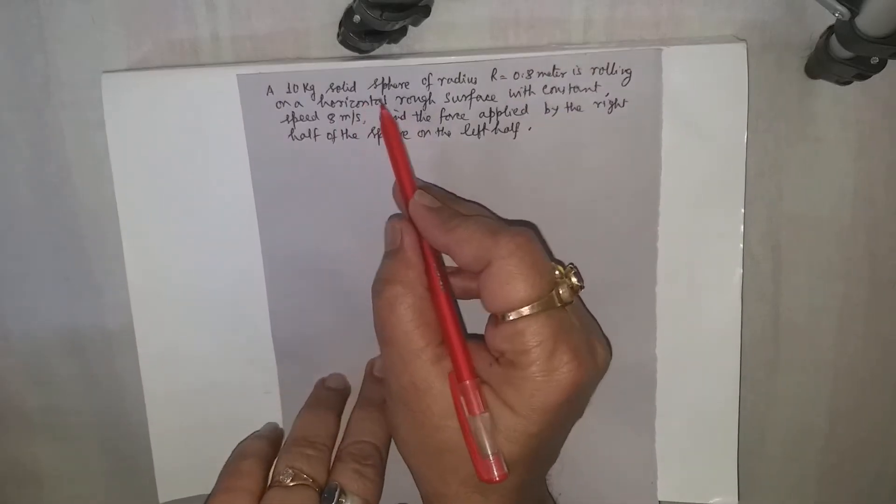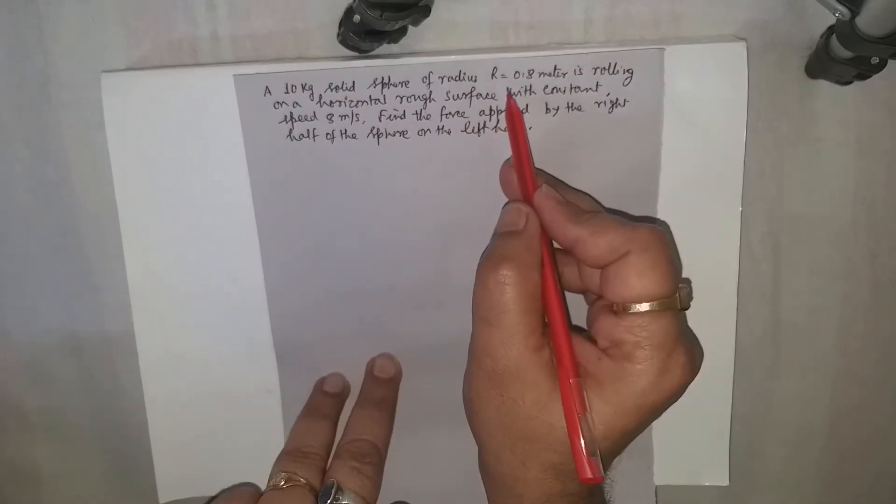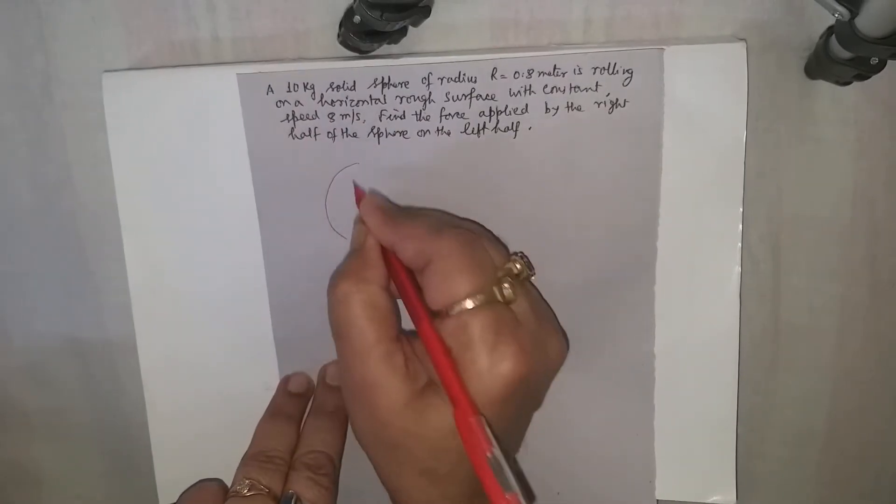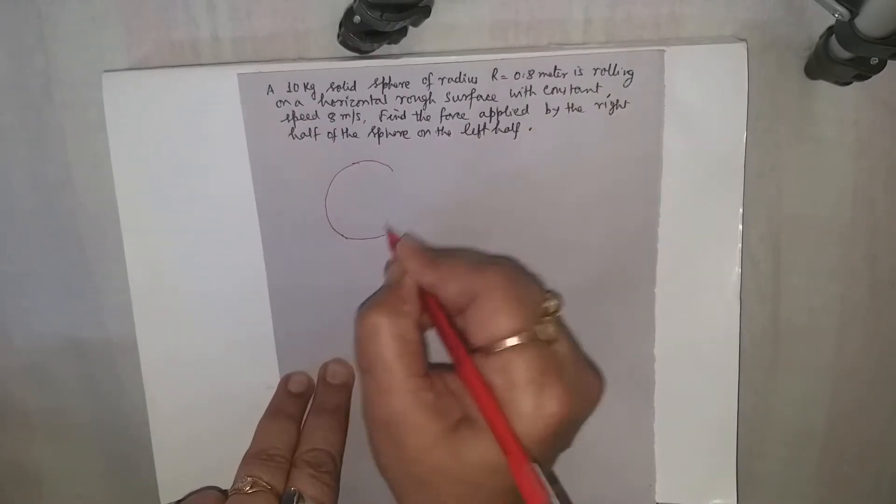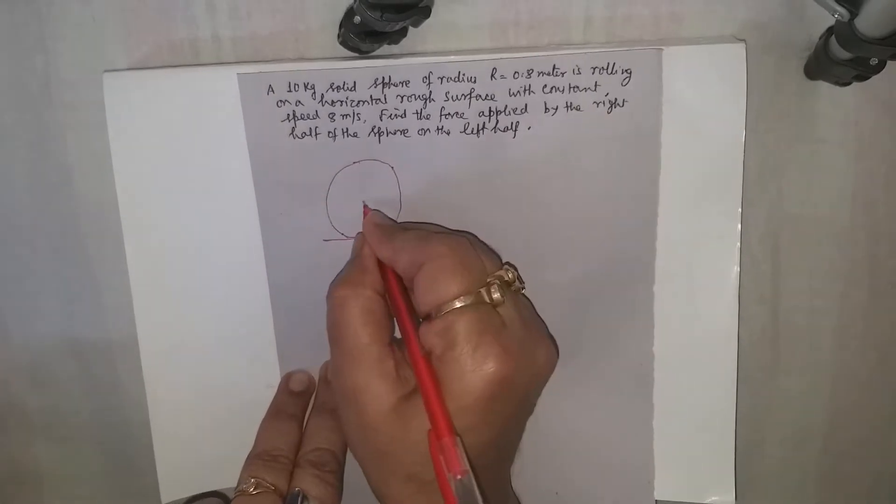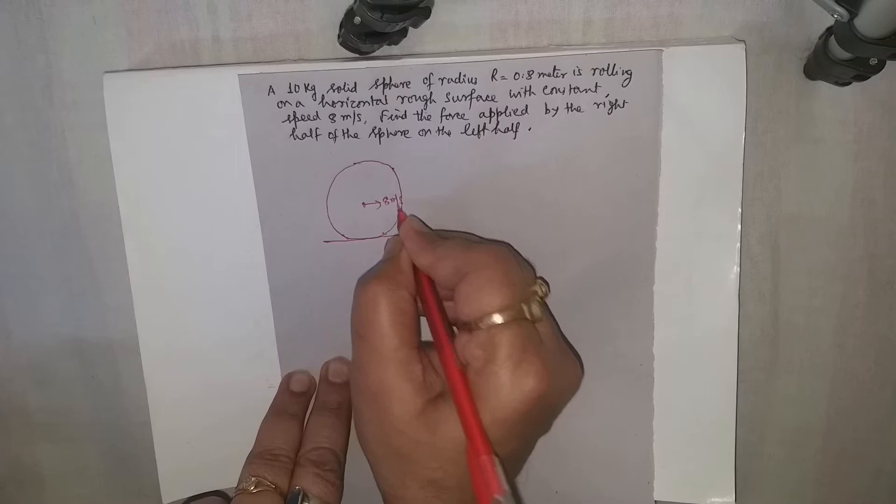The question says that there is a solid sphere of radius 0.8 meters and mass 10 kg. It is rolling on a horizontal rough surface at a constant speed of 8 meters per second.